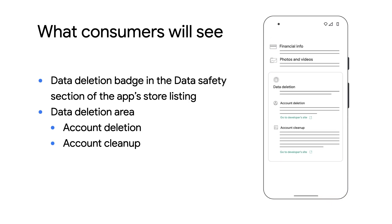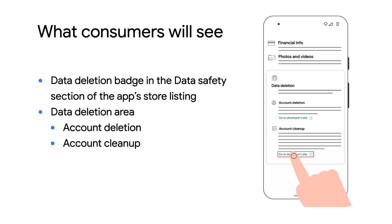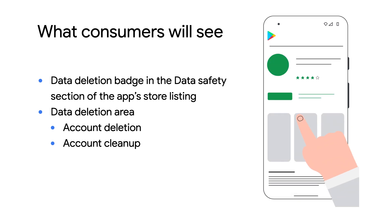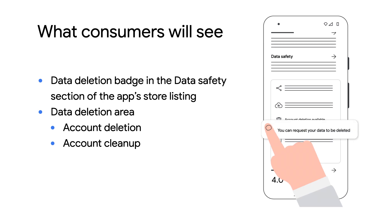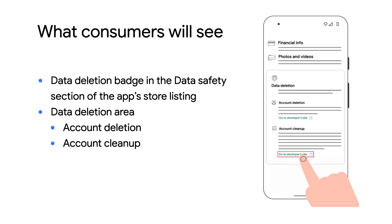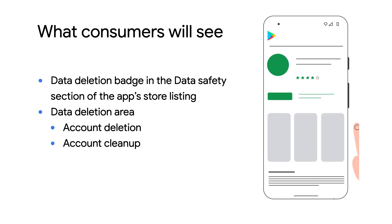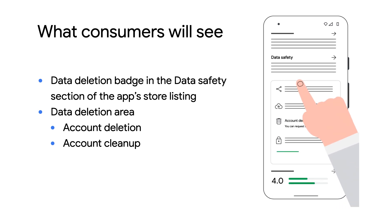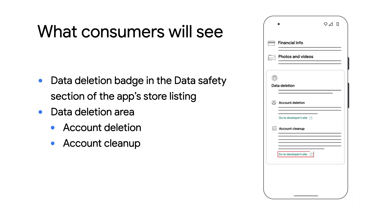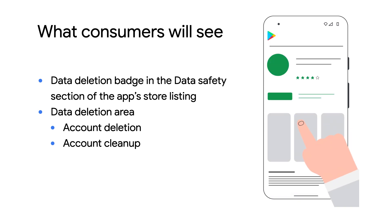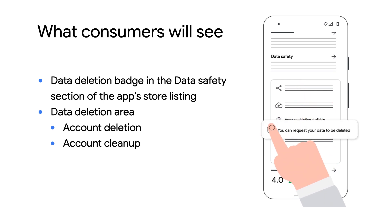Here's what the new feature might look like if you offer account deletion. Users can spot the new data deletion badge to quickly see if your app offers privacy control features. Then users can tap into the screen and go to a new data controls area. Here, users can ask for their account or for other data to be deleted. Once they make their choice, they can tap a link to go to your web resource. You may want to give users the additional option to delete other data, like activity history, images, and videos, instead of only offering the option to delete their entire account.